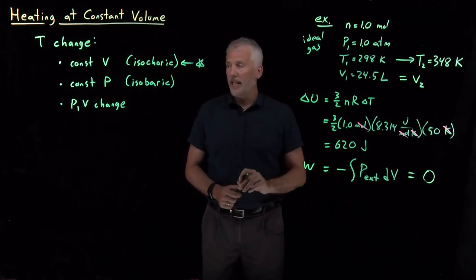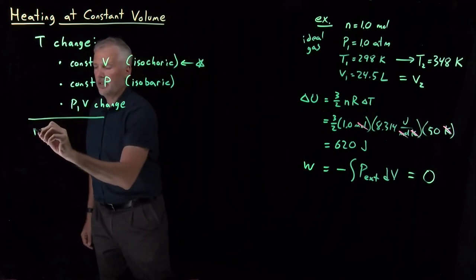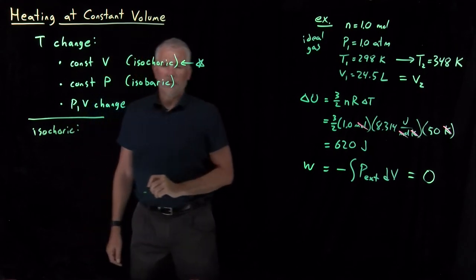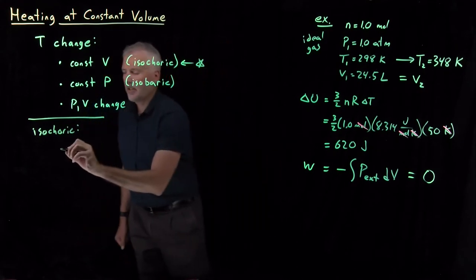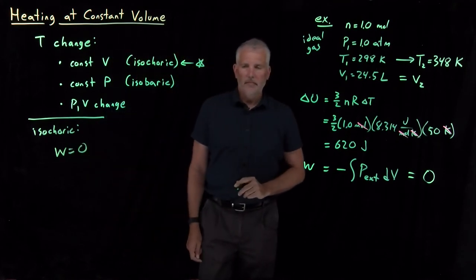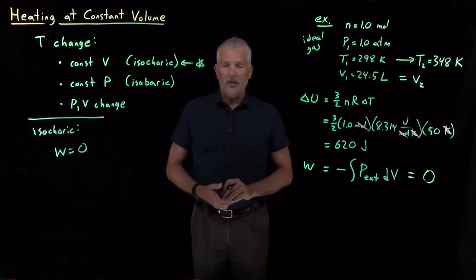So for any isochoric process, let's start collecting a list of equations. For any constant volume isochoric process, work is always going to be zero. If I'm not changing the volume, at least the PV work is going to be zero.